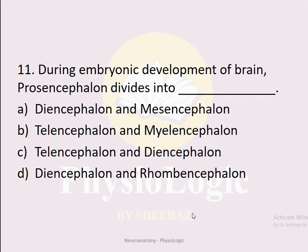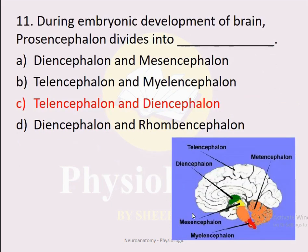MCQ number eleven: During embryonic development, prosencephalon divides into which two structures? Option A: diencephalon and mesencephalon. Option B: telencephalon and myelencephalon. Option C: telencephalon and diencephalon. Option D: diencephalon and rhombencephalon. The correct option is C. There are three cavities in embryonic development; the first, prosencephalon, divides into telencephalon and diencephalon. The telencephalon forms the cerebral cortex and the diencephalon forms the inner structures: subthalamus, hypothalamus, and epithalamus.